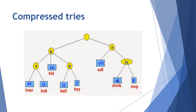In compressed tries, on the left side the words are bear, bell, bid, bull, and buy — B is the common letter, so it is placed as the main node. On the right side, S is the common letter for sell and stock. Additionally, T O is the common letter for stock and stop.